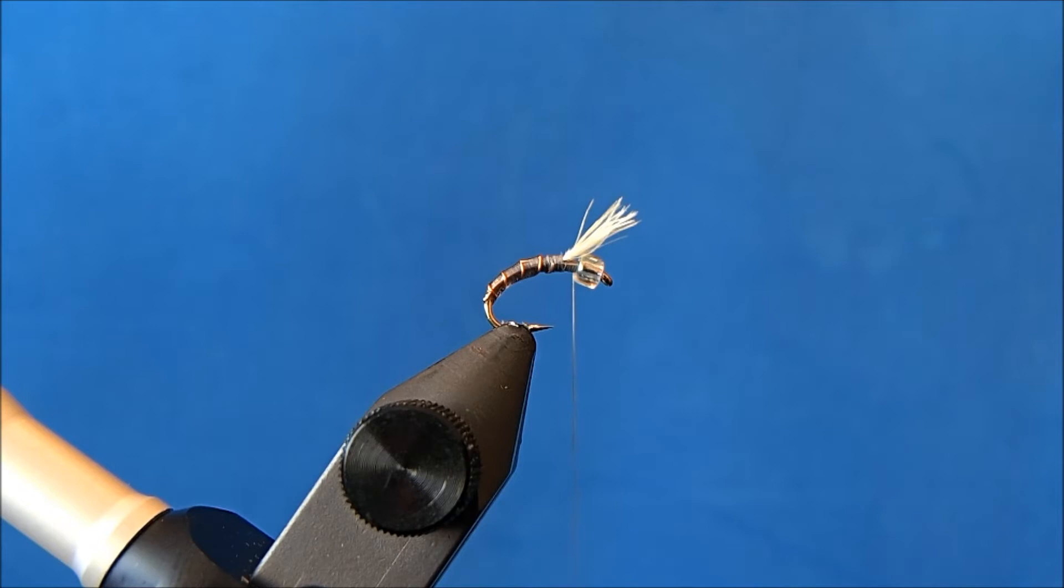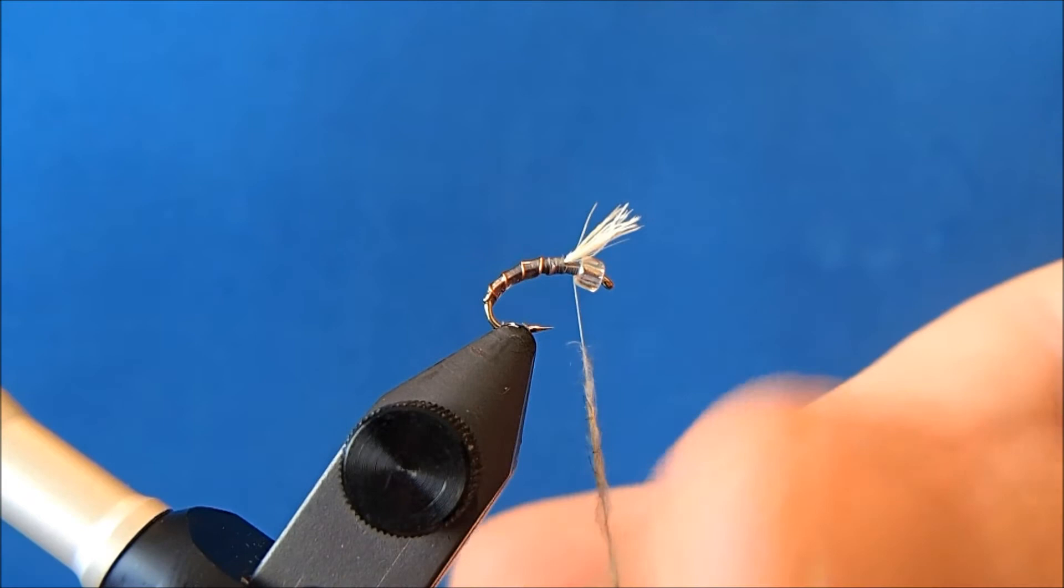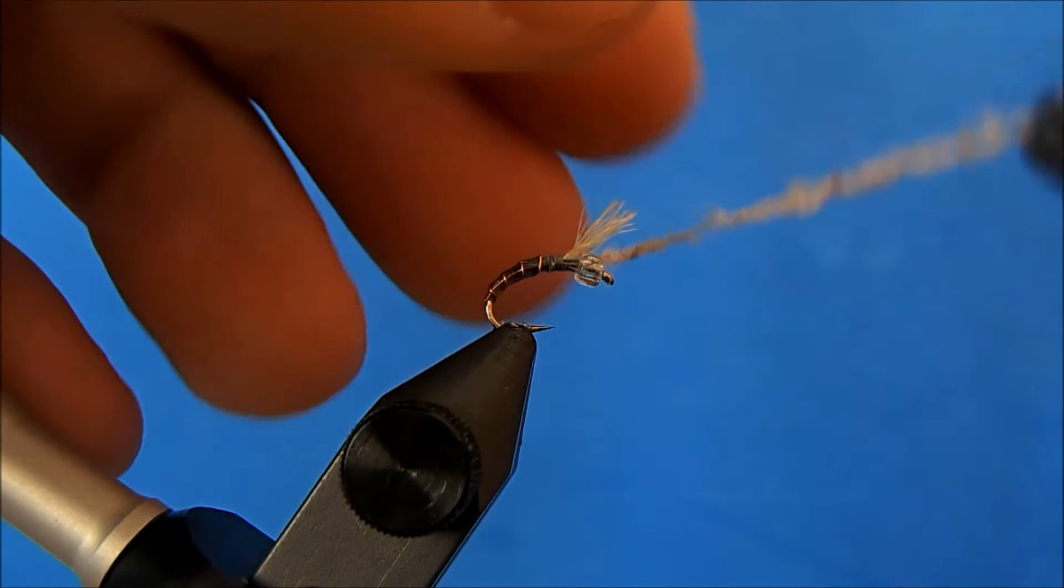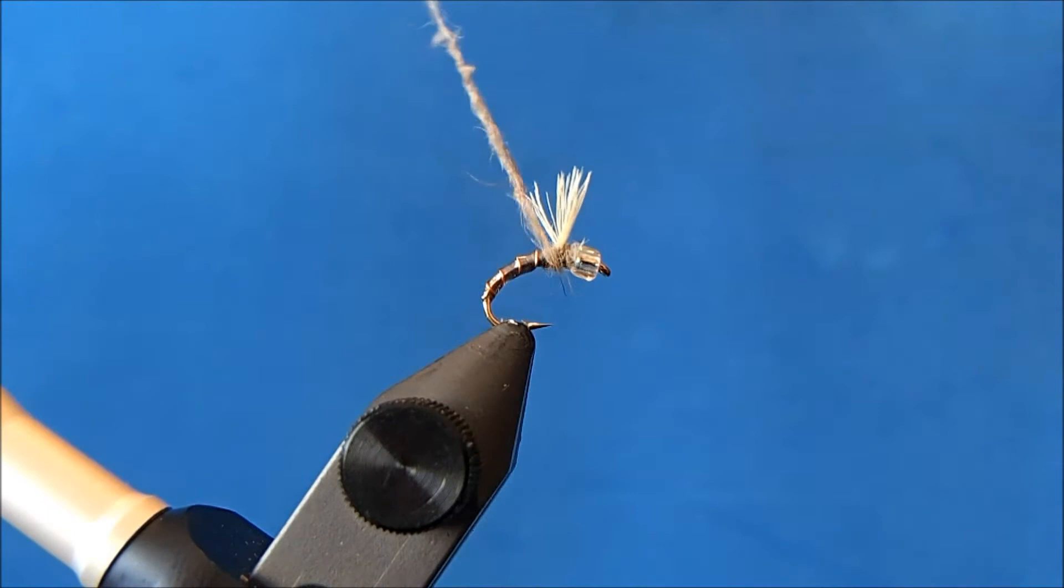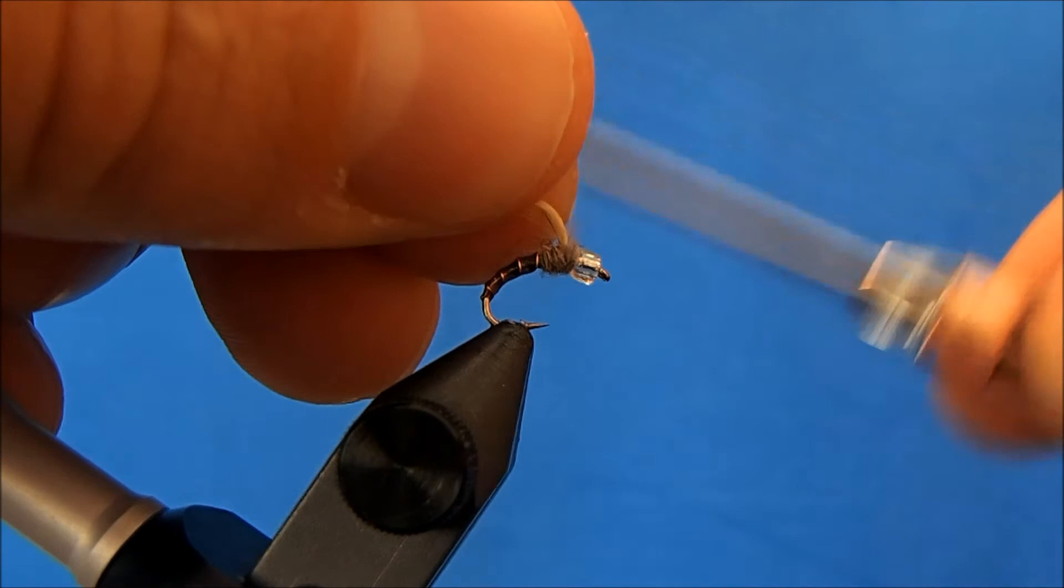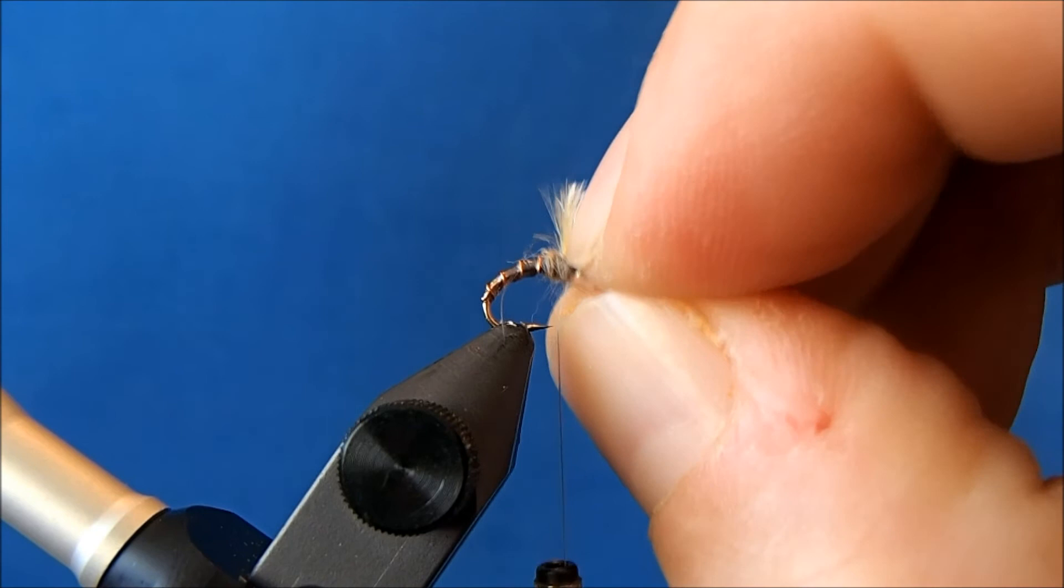Alright, now I don't have to wait for that to dry to dub in the thorax here. So I'm going to use just a gray dubbing, whatever you like to use. And I'll just work this dubbing in front of and behind that CDC. I'll just use my finger just to spread it out a little bit.